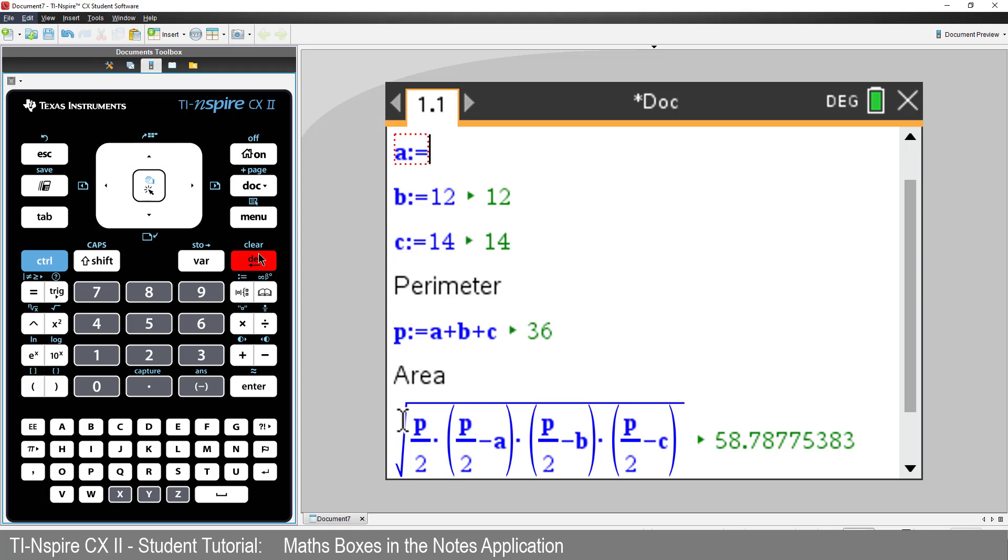We can now change A, B or C, and both the perimeter and area of the triangle will be updated.